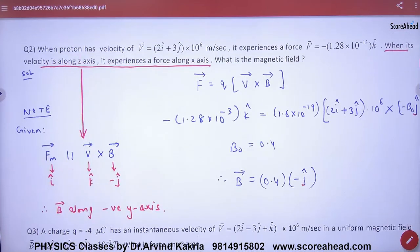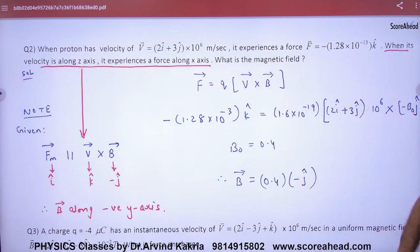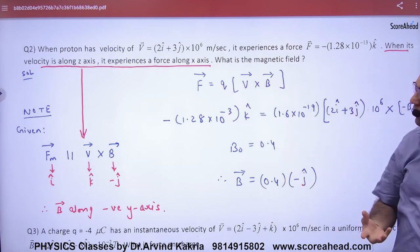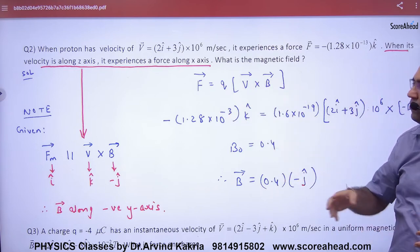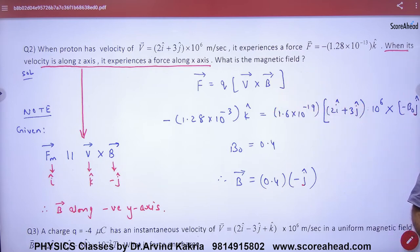Now this is a tricky question, let's take care of it. This question is that when a proton has a velocity of V vector, it experiences a force of F vector. When its velocity is along Z axis, it experiences force along X axis. So how much is the magnetic field? Now look, this question we have done in sheet.